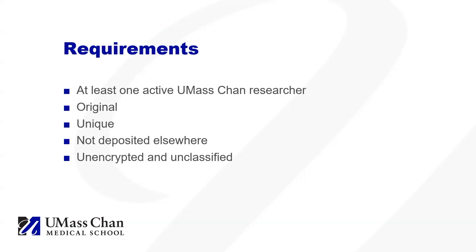To start, we will go through the requirements for depositing your data in the e-Scholarship at UMass Chan data repository. At least one author of the data must be an active UMass Chan researcher with an active UMass Chan email address. The data must be original, meaning it is collected or created from your research effort. The data must be unique, meaning it is new data that hasn't been deposited from a previous research project. The data must not be deposited elsewhere. If you are planning on or required to deposit your data in an additional repository, you cannot deposit the same data in the e-Scholarship at UMass Chan repository.